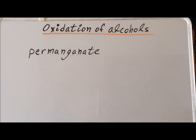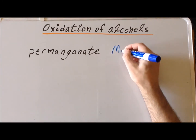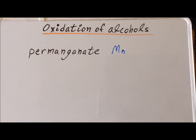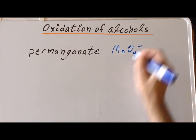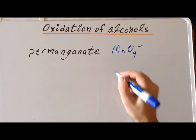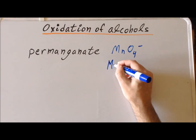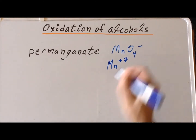One of the widely used oxidizing agents for the oxidation of alcohols is the permanganate ion. Permanganate has the formula MnO4 with a minus 1 charge. In this ion, manganese has a plus 7 oxidation number.